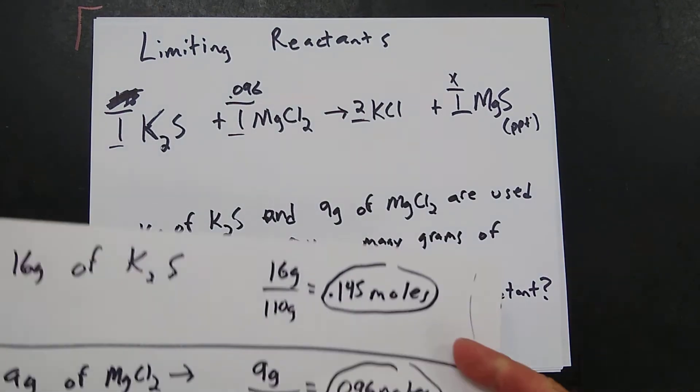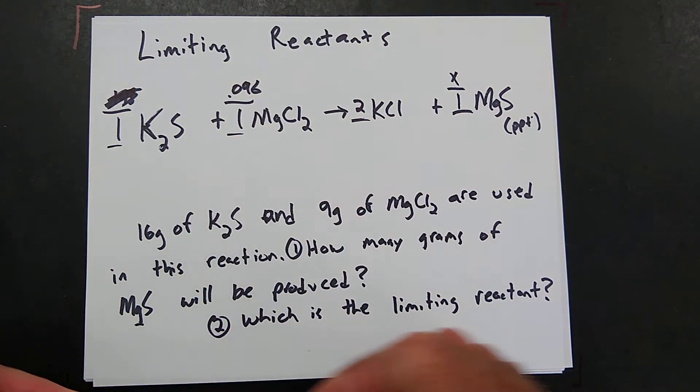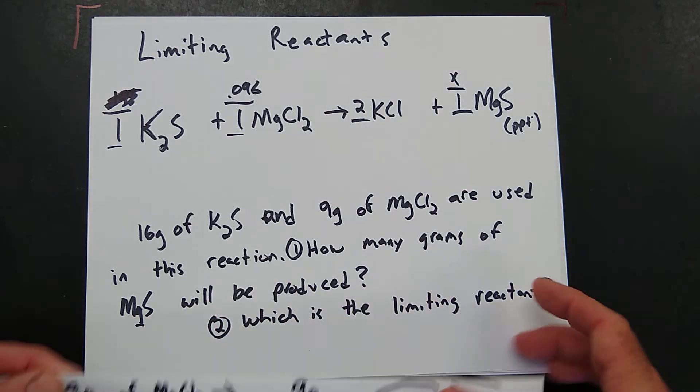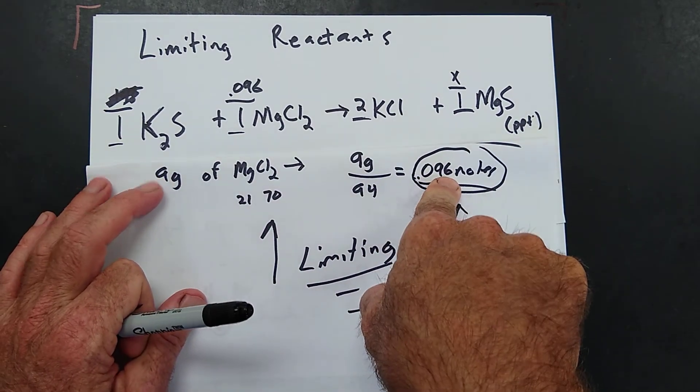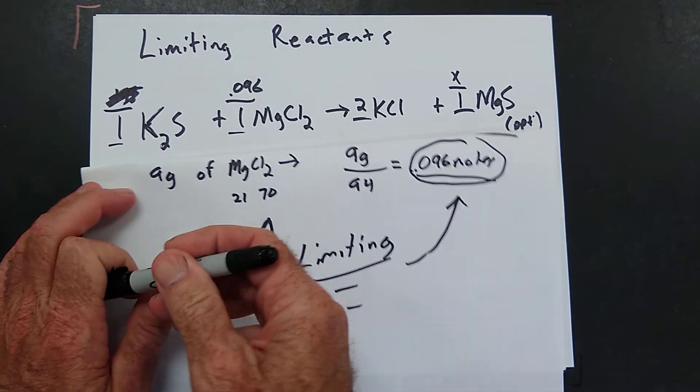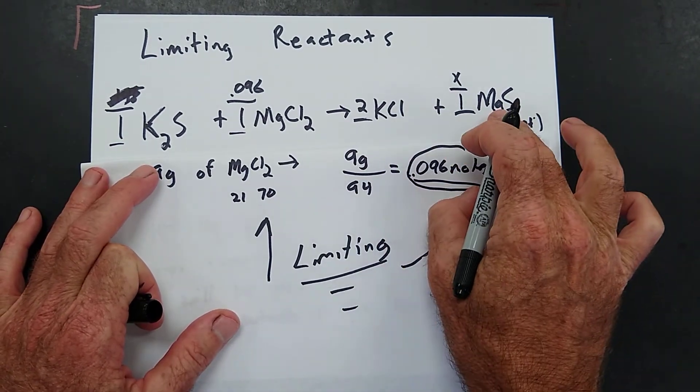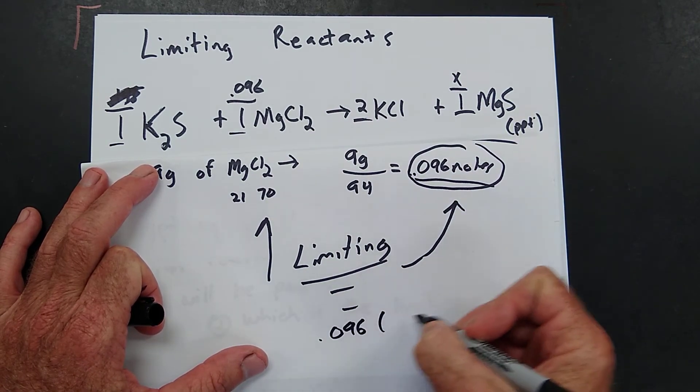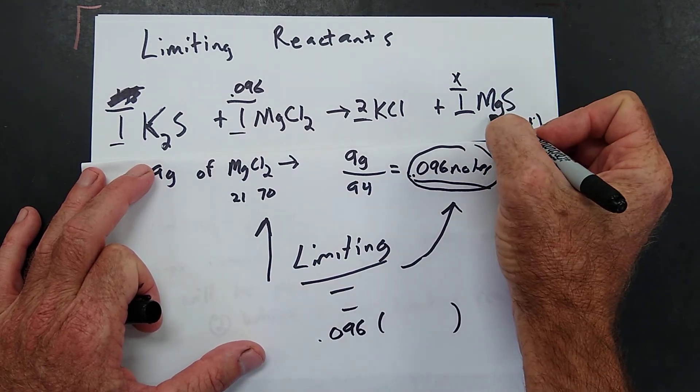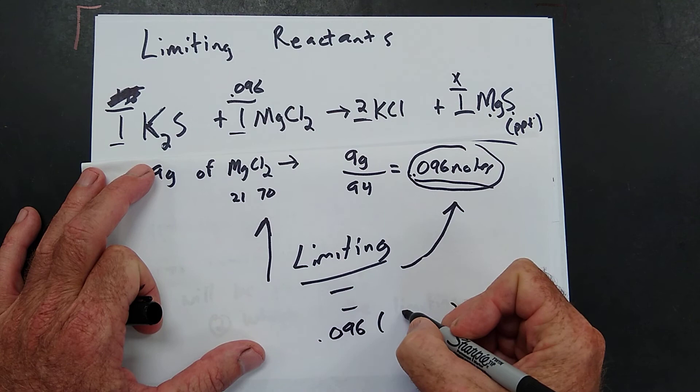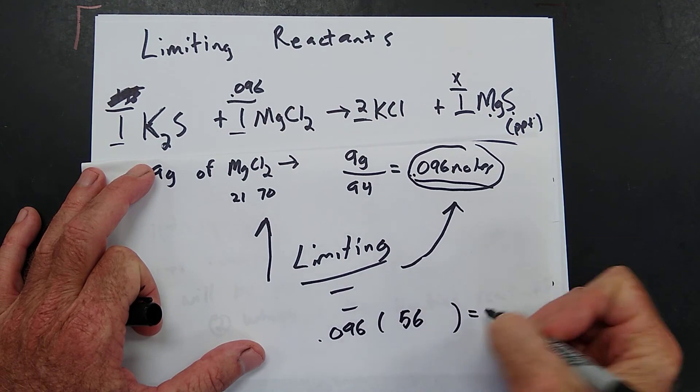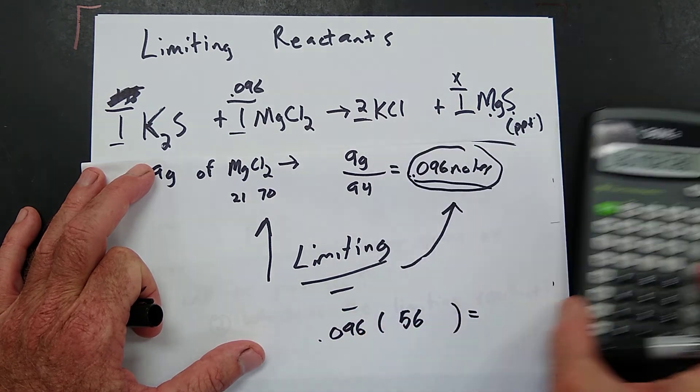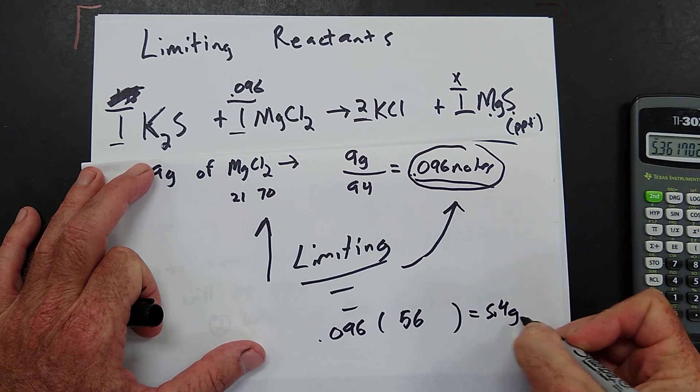Now let's look at the first question. 16 grams of potassium sulfide and 9 grams of magnesium. How many grams of magnesium sulfide will be produced? Well, since this is the limiting reactant, that's all you're going to get. You're only going to get 0.096 moles of magnesium sulfide. 0.096 times magnesium sulfide weighs 24 plus 32. So that's going to be 56. 0.096 times 56. We're only going to make 5.4 grams.